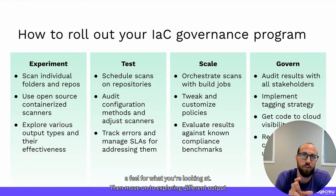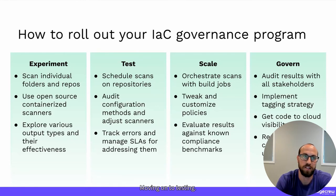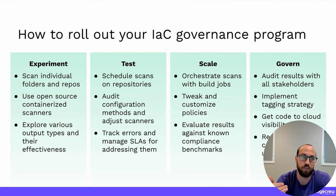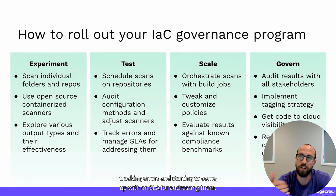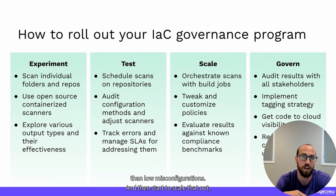Then move on to exploring different output types and their effectiveness for your environment. Start testing by scheduling scans for every repository, auditing configurations, tracking errors, and starting to come up with an SLA for addressing them — with critical misconfigurations having a much shorter SLA than low ones.